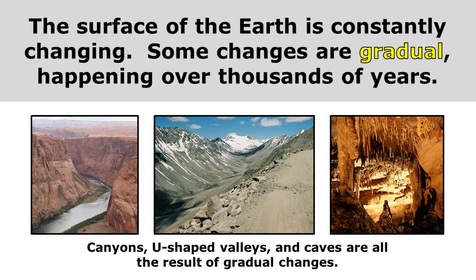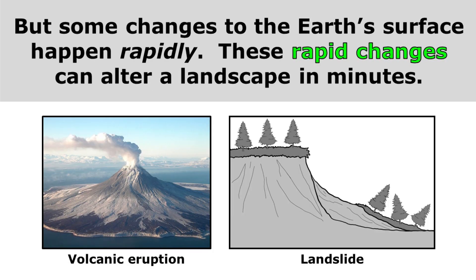The surface of the earth is constantly changing. Some changes are gradual, happening over thousands of years. Canyons, U-shaped valleys, and caves are all the result of gradual changes.